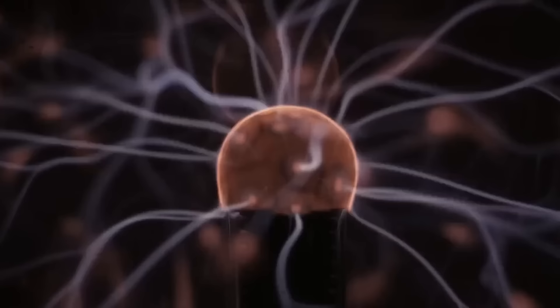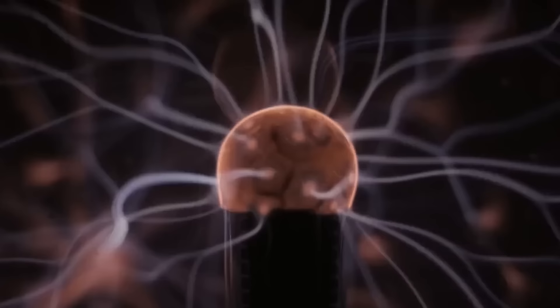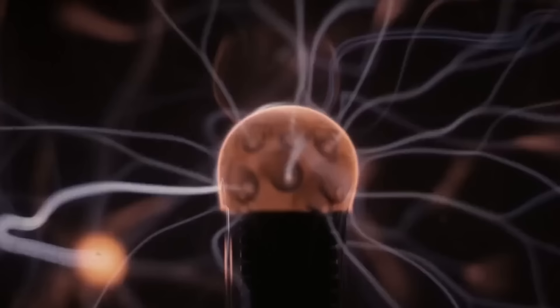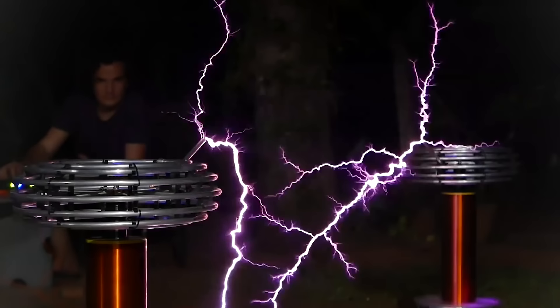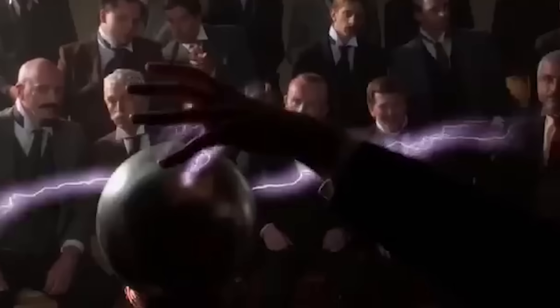With the Tesla coil, he showcased an early version of wireless energy transfer, inspiring countless inventors to follow. Furthermore, Tesla's work with the coil unintentionally paved the way for advancements in radio frequency lighting, demonstrating his exceptional ability to anticipate technologies far ahead of his time.